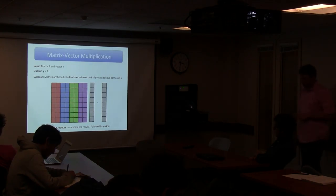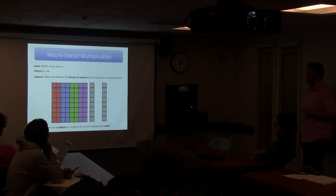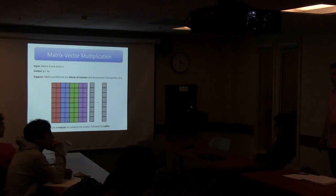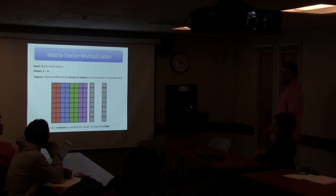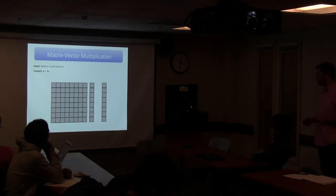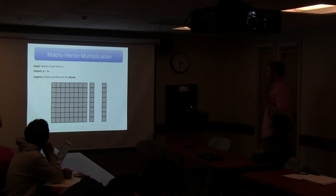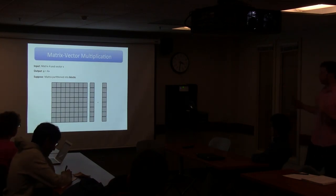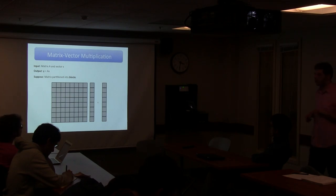So we have two different approaches. What's weird about the second one? Each column of A is as large as the vector X, so if we couldn't store X on every machine we certainly can't store these columns. What we really want is a matrix partitioned into blocks - that would be ideal for memory usage.